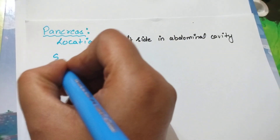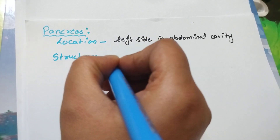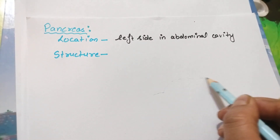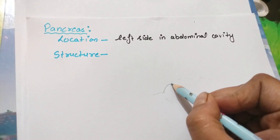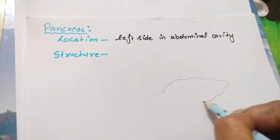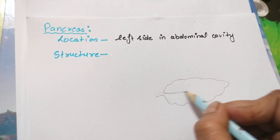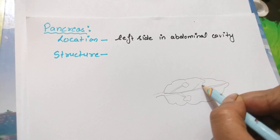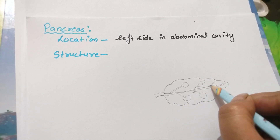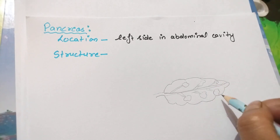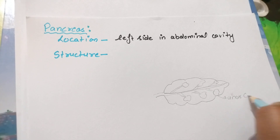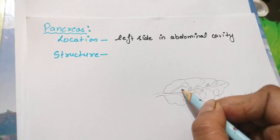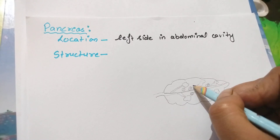Next important point is structure. Now what is the structure of this pancreas? Let us draw a rough diagram. Its structure is like a leaf. It has the pancreatic duct. These flower-shaped structures are known as acinar cells. And between these cells, another type of cells are also present, called islets of Langerhans.